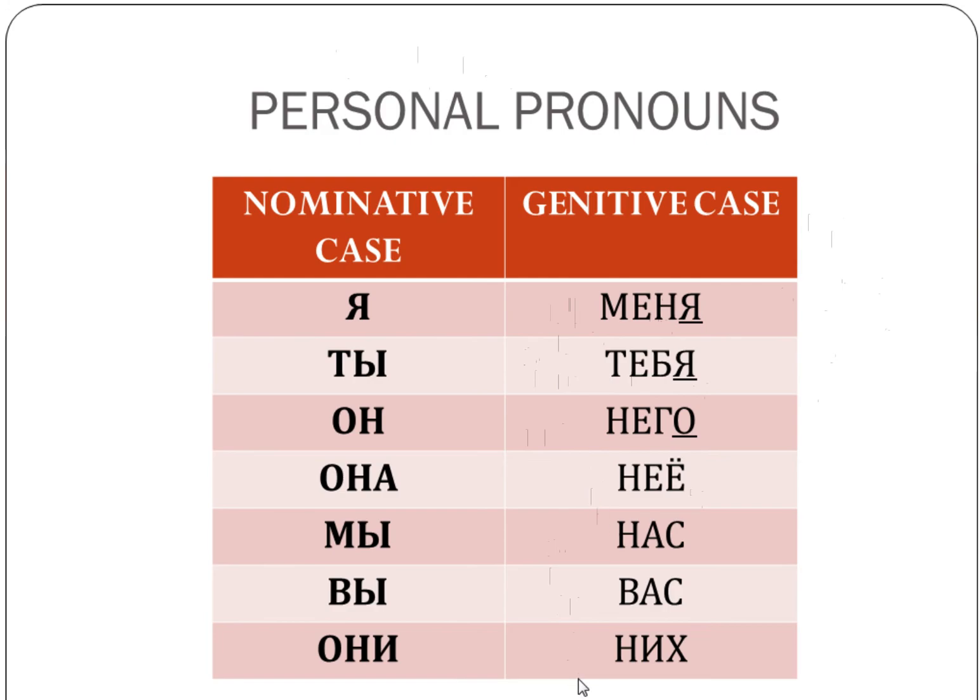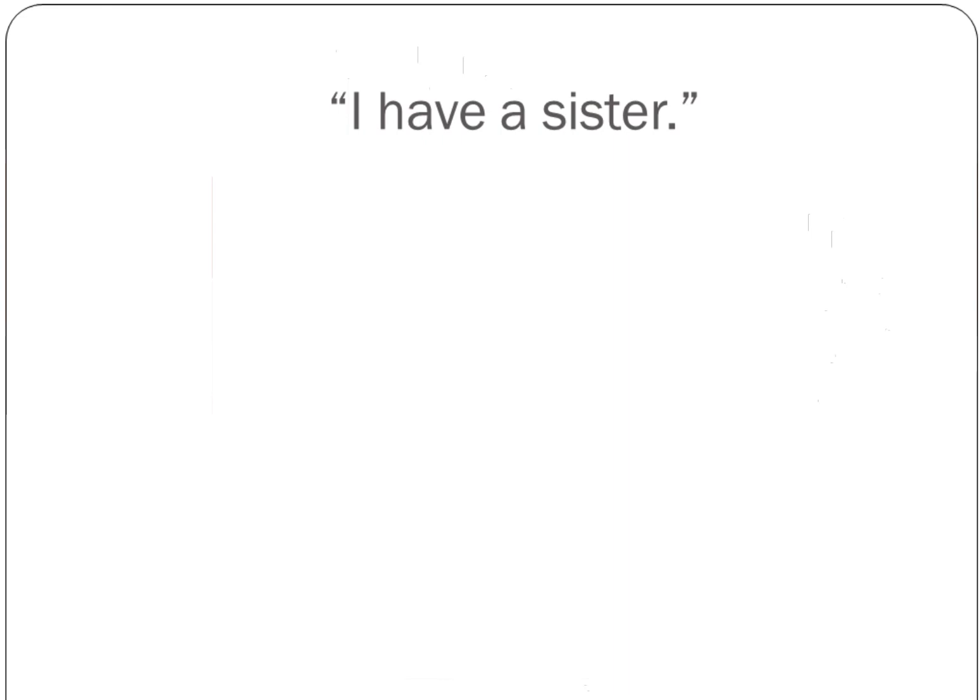So these are the forms that you have to memorize right now because to express the idea of having you will be adding у to these forms, and that's how you will be starting your sentences. So going back to our sentence, I have a sister - every single time there is have as a verb in a sentence in English, you need to use у. Every single time you use у, you need the genitive case. So for this sentence I need the genitive case of I, which is меня. У меня.